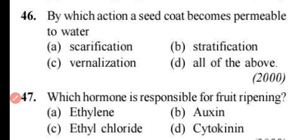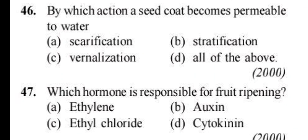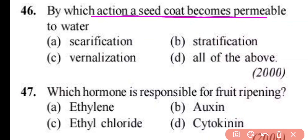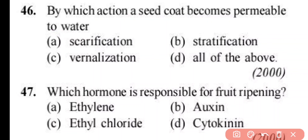Question number 46. By which action does a seed coat become permeable to water? Scarification, stratification, vernalization, or all of the above. Correct answer is option A. Scarification makes the seed coat permeable to water.